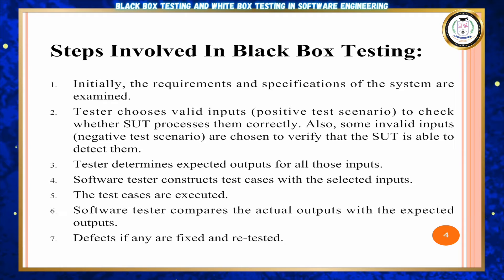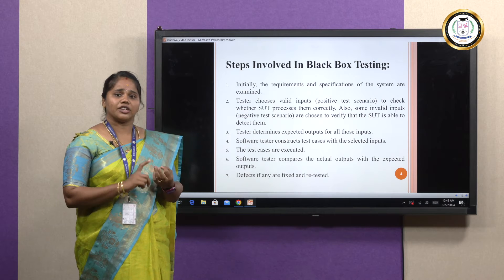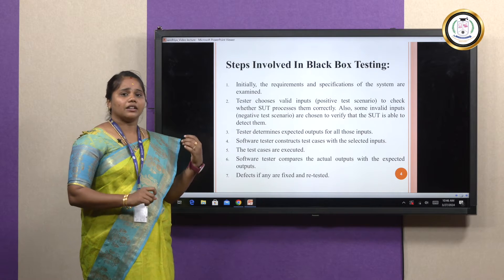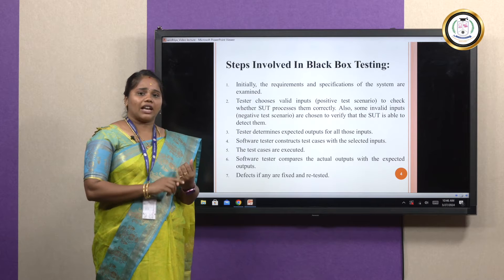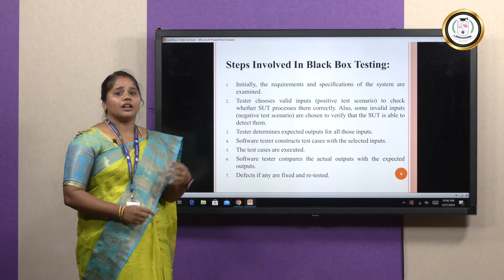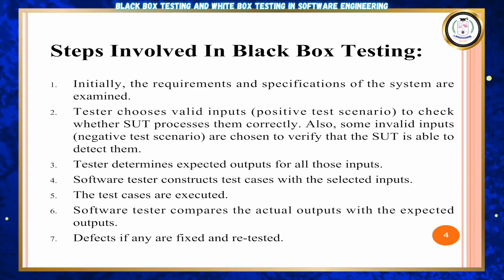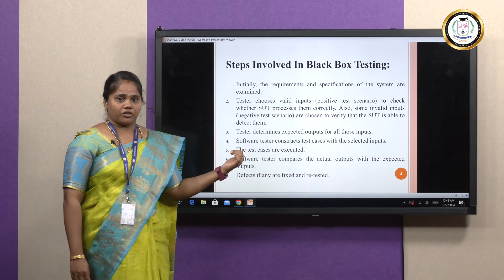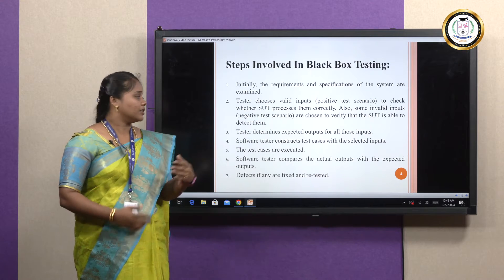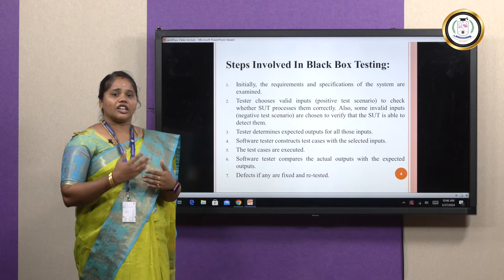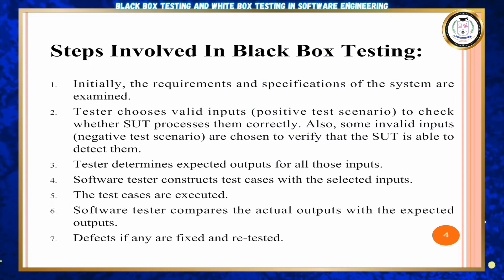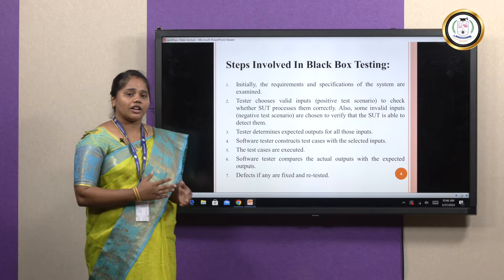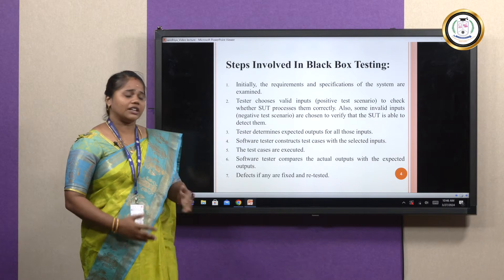Next, we will discuss the steps involved in black box testing. First, the tester identifies the specification requirements of the software. Next, they determine the valid input and invalid input — valid input falls under the positive scenario, and invalid input falls under the negative scenario. Both are tested through the software and test process. It is used to detect faults, compare expected input and output, and fix inputs before the retest process.